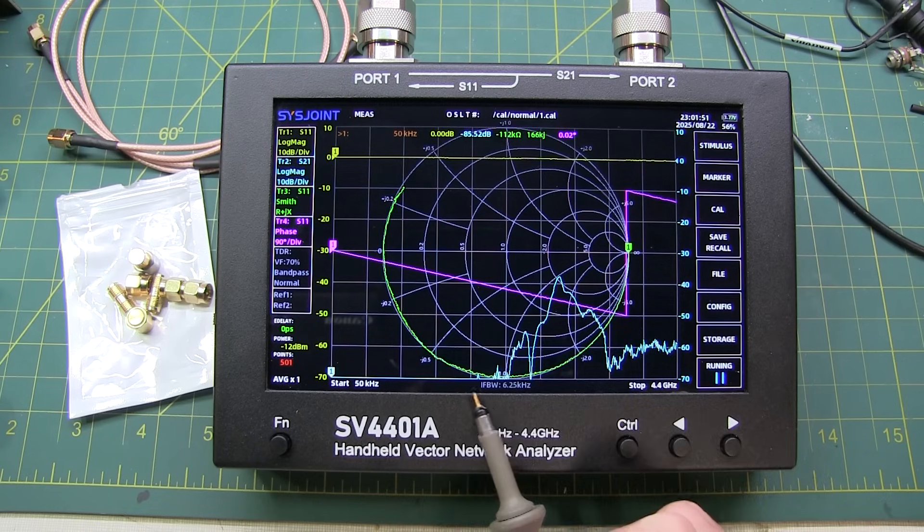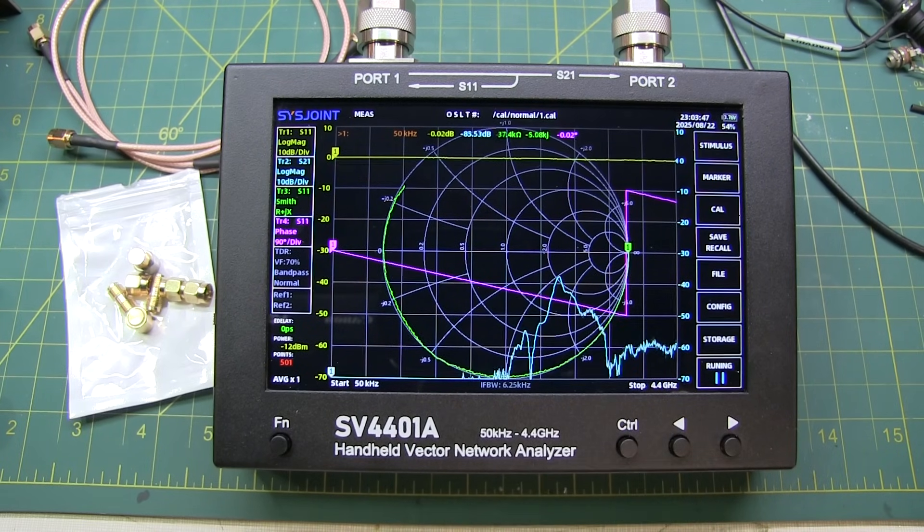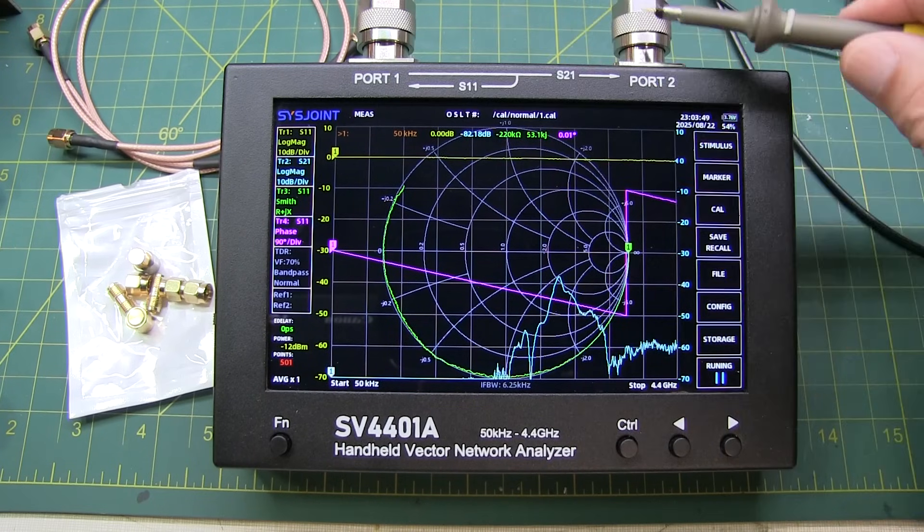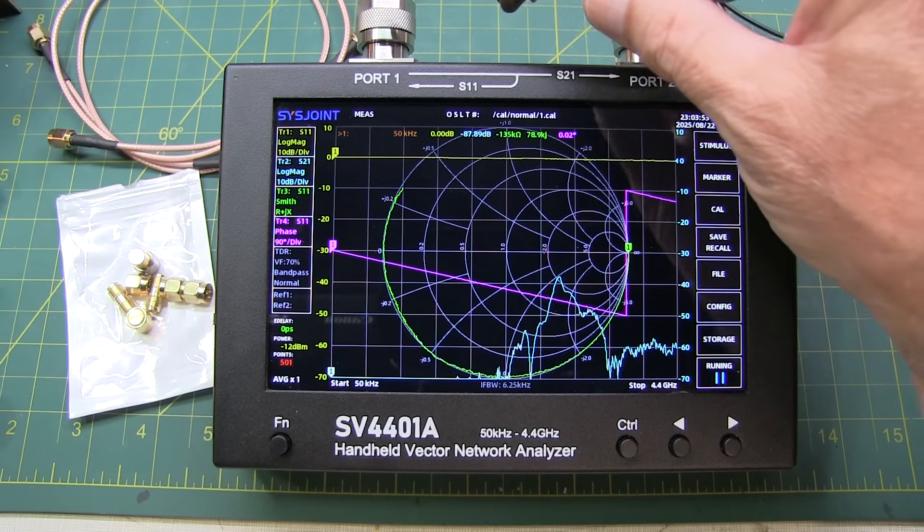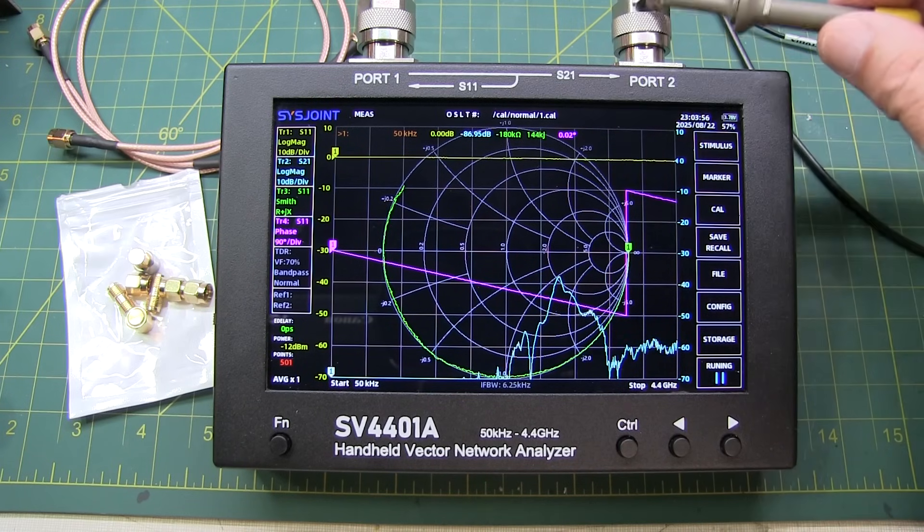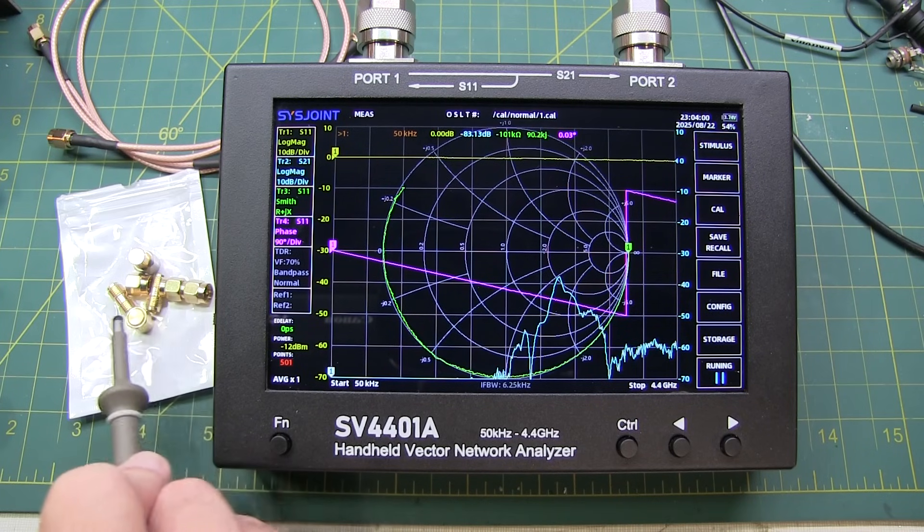This large touchscreen display is really bright and is actually visible out in broad daylight. Now the unit is equipped with a pair of N connectors to make connections to your devices. It also comes with a pair of N to SMA compatible connectors, as well as the open load short and through calibration kit components and a pair of SMA cables.